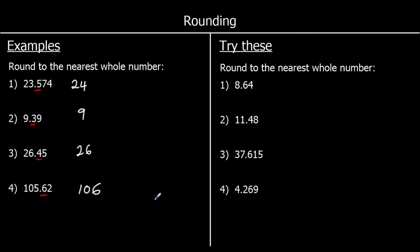Okay, 4 for you to try — give these ones a go. We're looking at the number after the decimal point and saying, is it 5 or above? So 8.64 is going to round up — so it's 9. 11.48 is going to stay as it is — that's 11. 37.615 is going to round up to 38. And 4.269 is going to stay as it is — and that is 4.